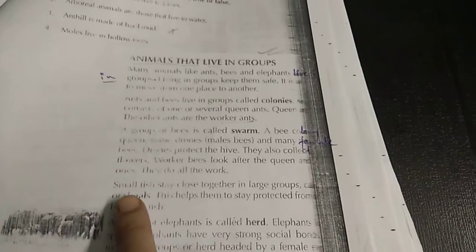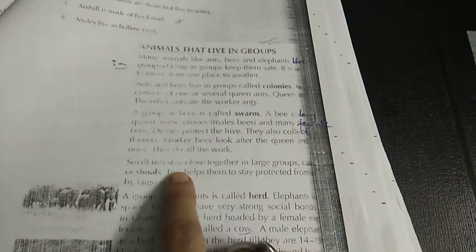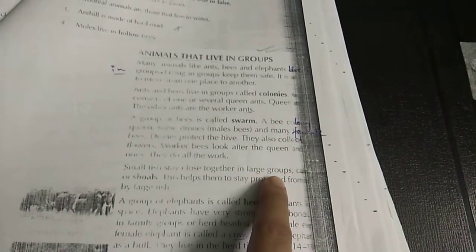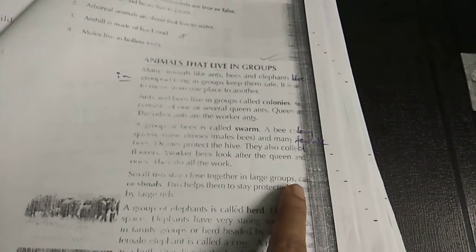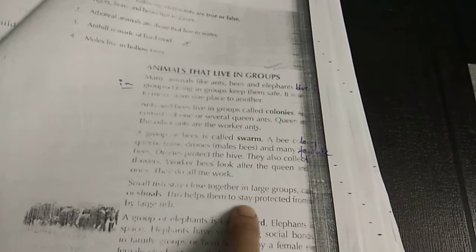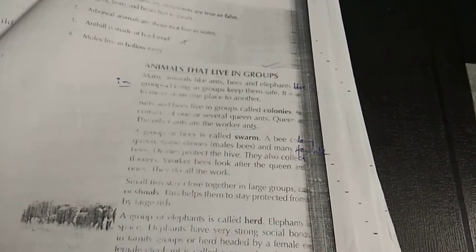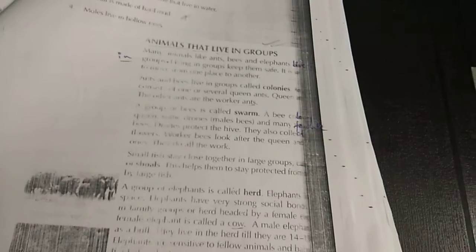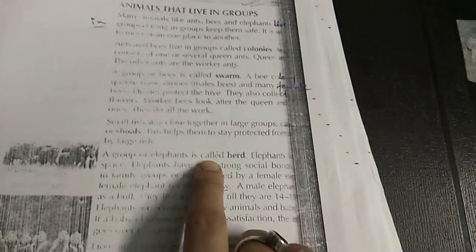Now they live in group, all these things they live in group. Some fish stay close together in large group. Like fishes are shoal. They help them to stay protected from by large fish. A group of elephant is called herd.